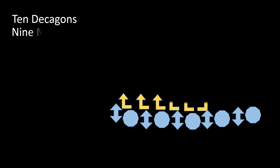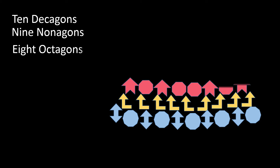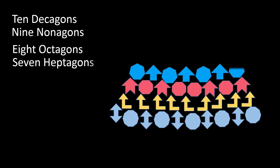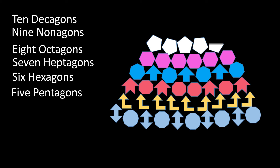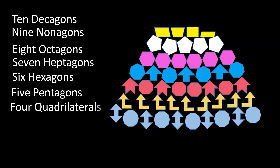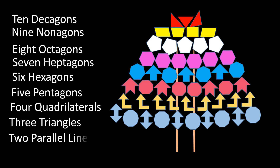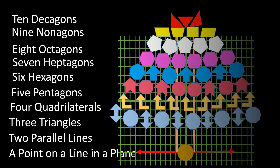On the tenth day of geometry, my teacher gave to me ten decagons, nine nonagons, eight octagons, seven heptagons, six hexagons, five pentagons, four quadrilaterals, three triangles, two parallel lines, and a point on a line in a plane.